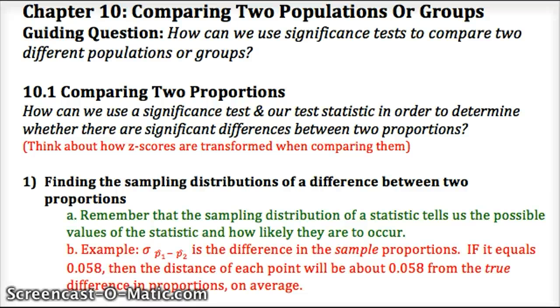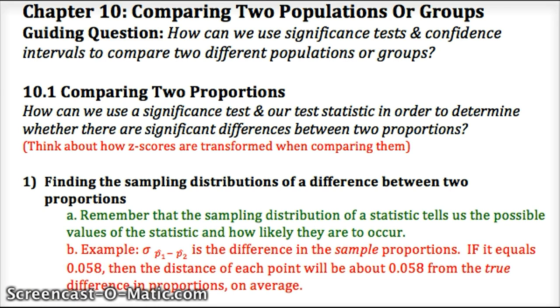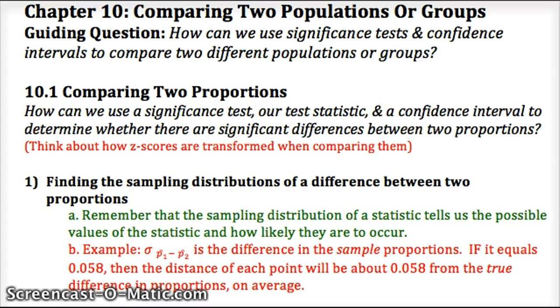For chapter 10, lesson 1, we're going to be comparing two populations or groups. Everything we look at is going to be significance tests and confidence intervals for two proportions in 10.1 and then for two sample means in 10.2. Our guiding question is how can we use significance tests and confidence intervals to compare two different populations or groups. We're looking specifically at proportions for this lesson.